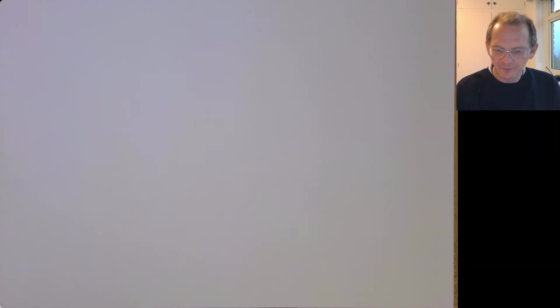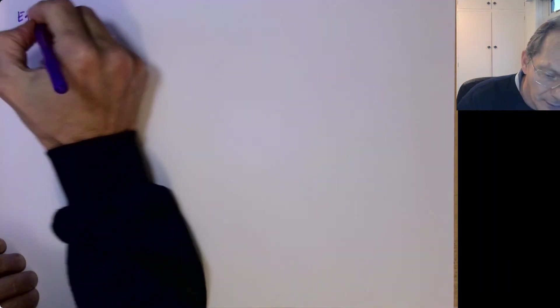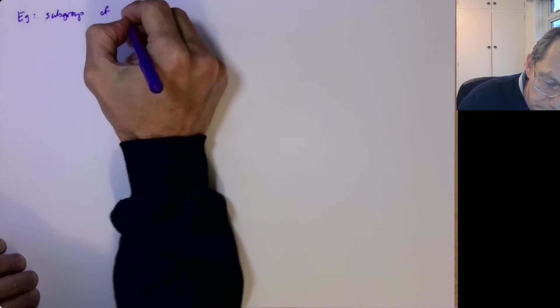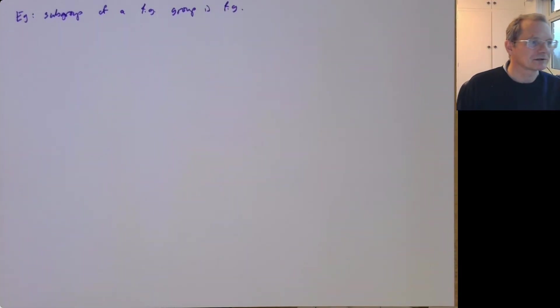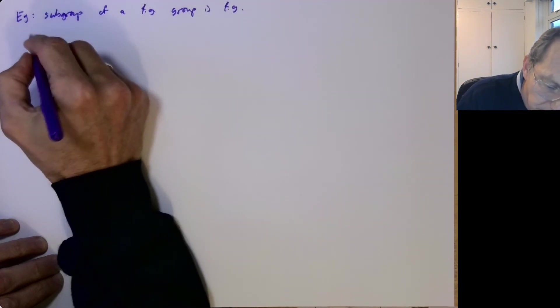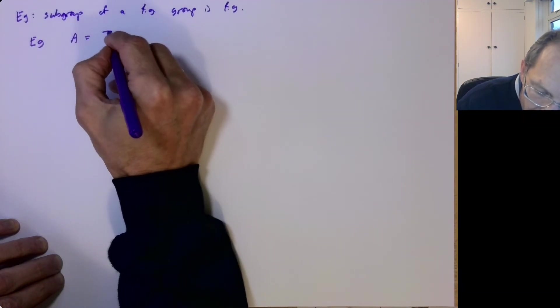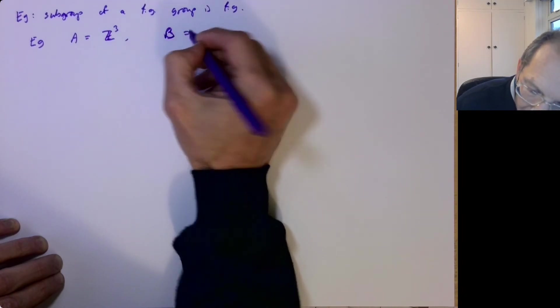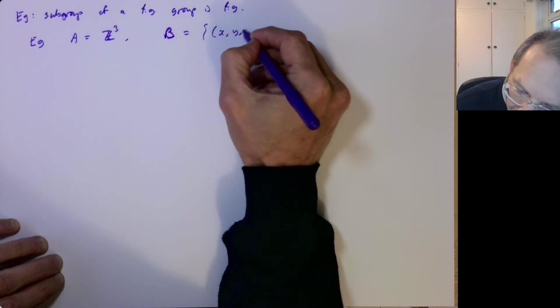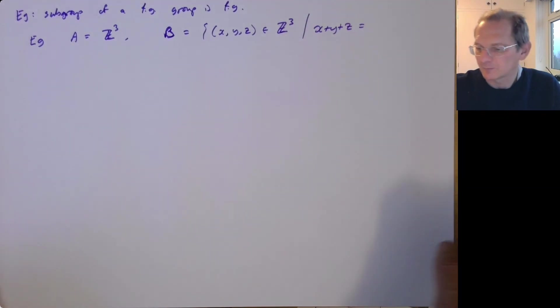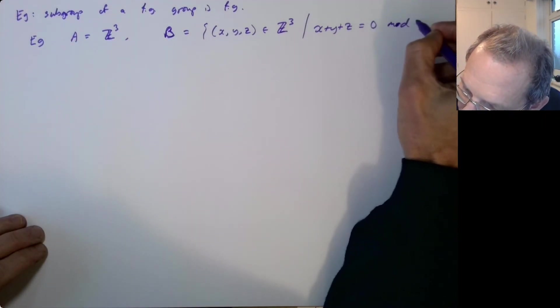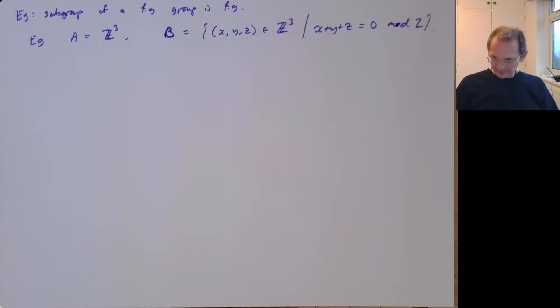And let's also have a quick example of the other theorem we said, that a subgroup of a finitely generated group is finitely generated. So we could have A is Z cubed, and B is the set of things X, Y, Z in Z cubed such that X plus Y plus Z is 0 mod 2. So that's a subgroup of a finitely generated abelian group.